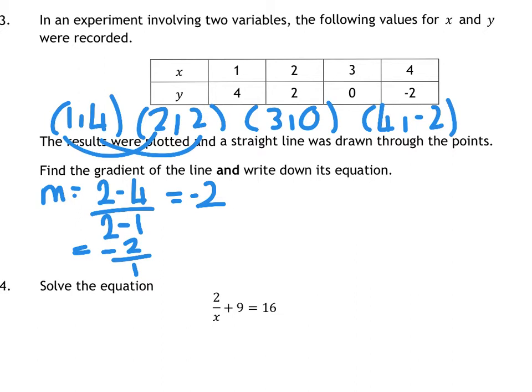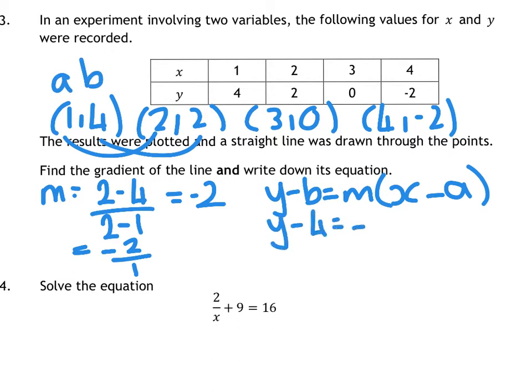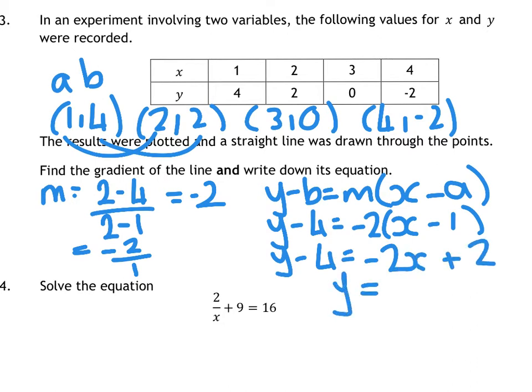We don't know our c value. So I'm going to use the y minus b equals m bracket x minus a method. Let's go to the first coordinate and label that a, b. So you've got y minus 4 equals negative 2 bracket x minus 1. Y minus 4 gives you negative 2x plus 2 when you multiply it out. Minus 4 comes over and becomes plus 4. So we've got minus 2x plus 6. And that is your equation of that line.